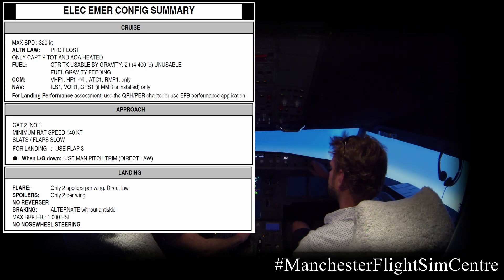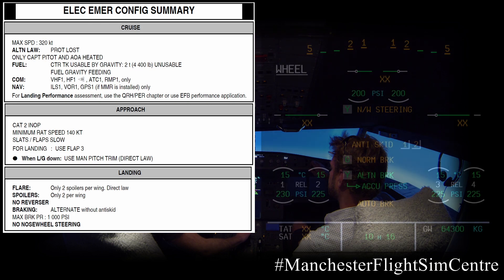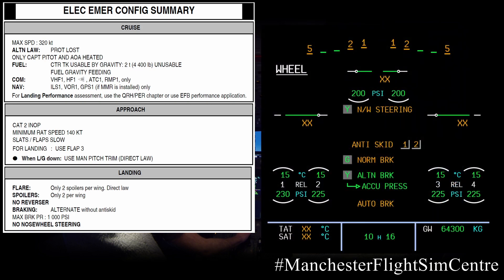The next points relate to the deceleration of the aircraft. Obviously, we have no reversers. For braking, we are on alternate without anti-skid, and the max brake pressure should be modulated to 1000 psi. Finally, due to the loss of both BSCUs, we have no nose wheel steering.